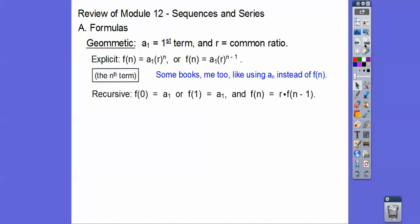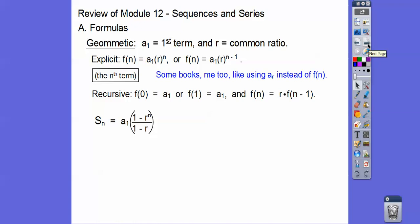The recursive formula for geometric sequences always starts with the first term — whether n equals 0 or 1, they equal a sub 1. Then f(n) = r times f(n−1). The sum of the first n terms of a geometric sequence is a sub 1 times (1 minus r to the n) over (1 minus r).